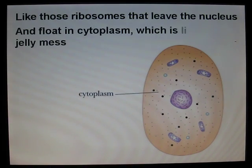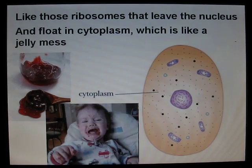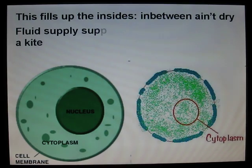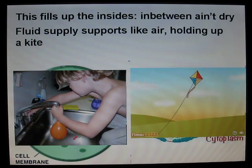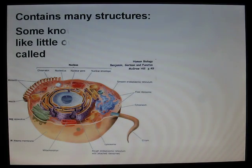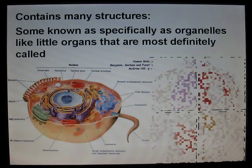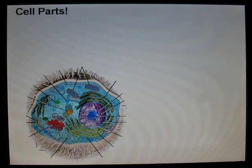And float inside the cytoplasm, which is like a jelly mass. This fills up the inside, in between organelles — fluid supply, supports like air holding up a kite. Contains many structures, some known specifically as organelles, like little organs that are most definitely called cell parts.